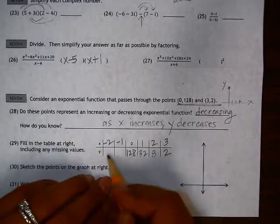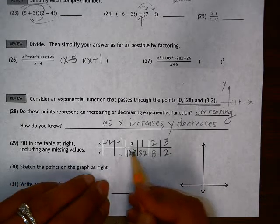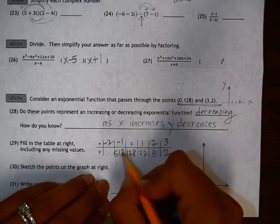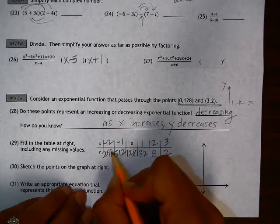Working backwards to fill in the y values for these two, we would have to multiply by 4. So multiplying by 4 would give us 512 and 2048.